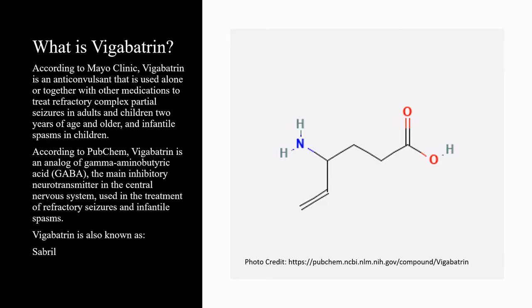According to Mayo Clinic, Vigabatrin is an anticonvulsant that is used alone or together with other medications to treat refractory complex partial seizures in adults and children 2 years of age and older, and infantile spasms in children. According to PubChem, Vigabatrin is an analog of gamma-aminobutyric acid, the main inhibitory neurotransmitter in the central nervous system, used in the treatment of refractory seizures and infantile spasms.